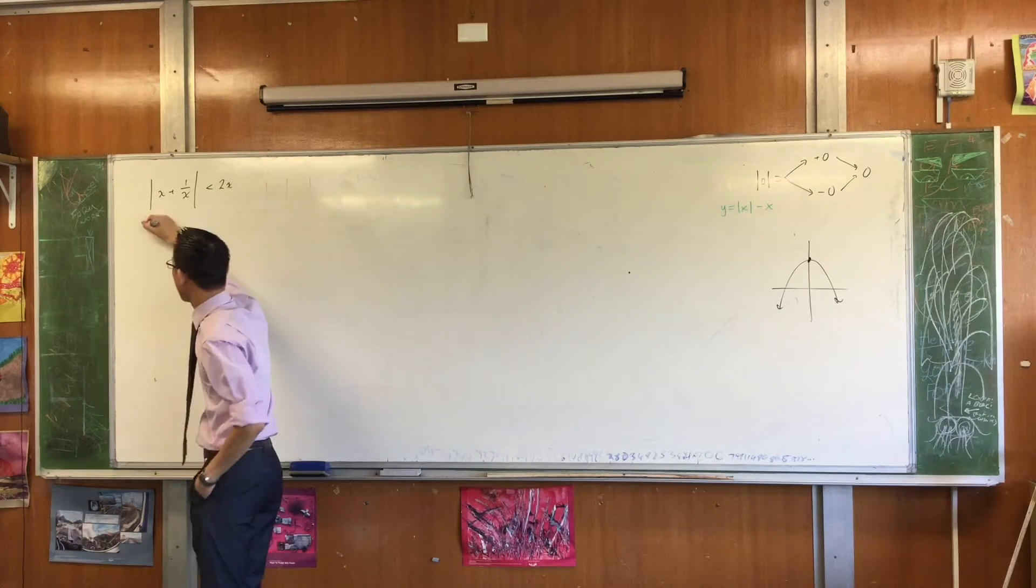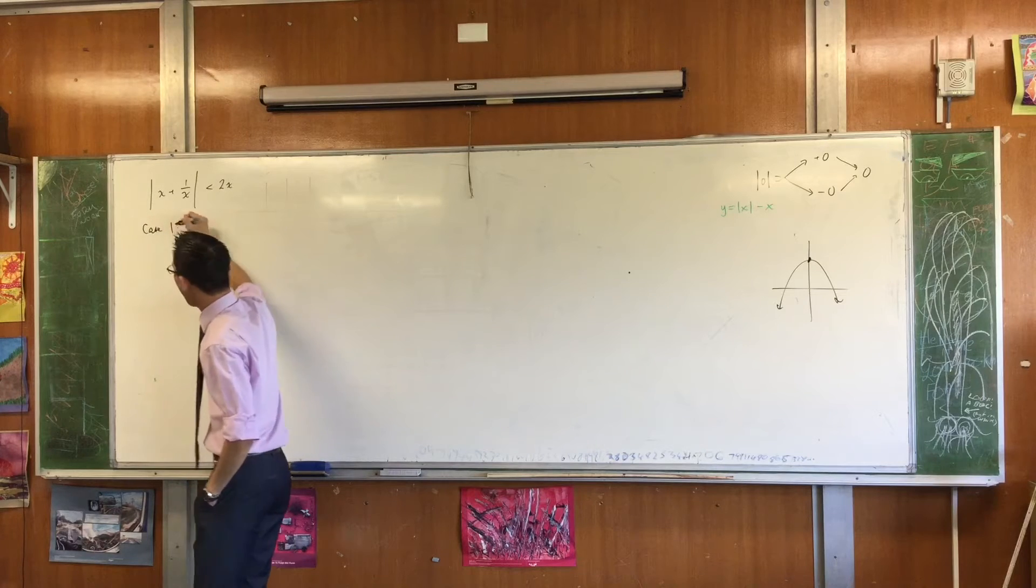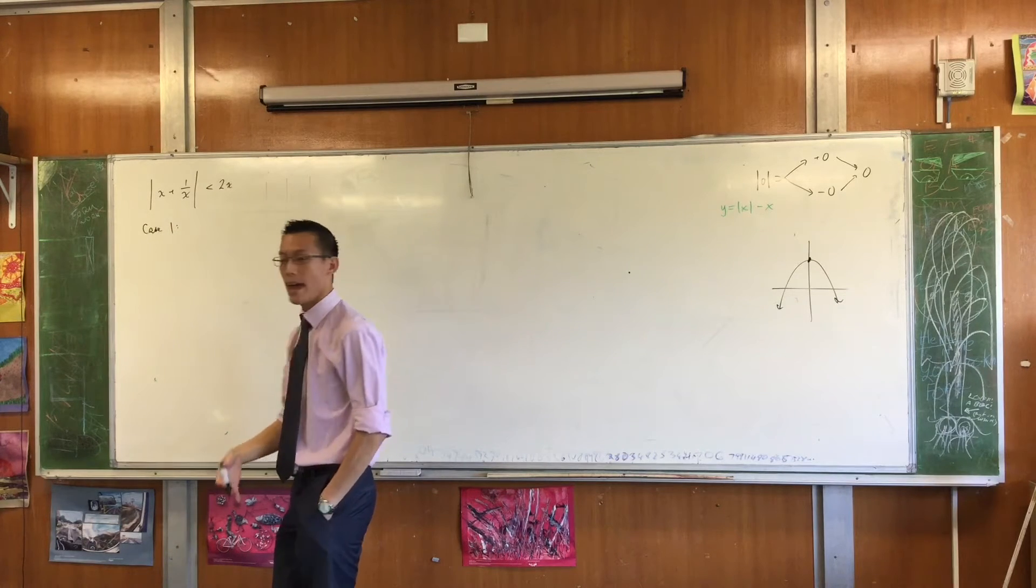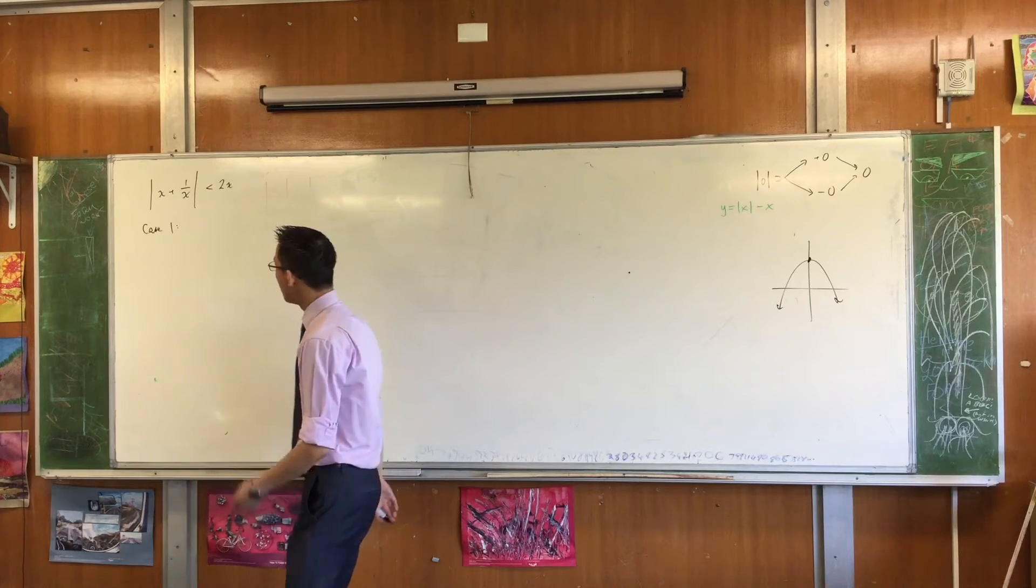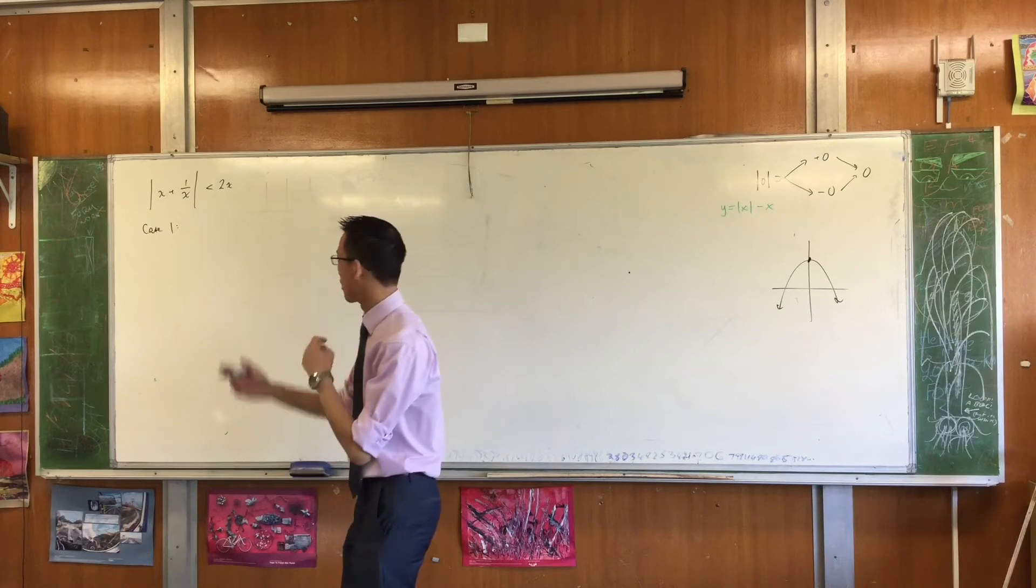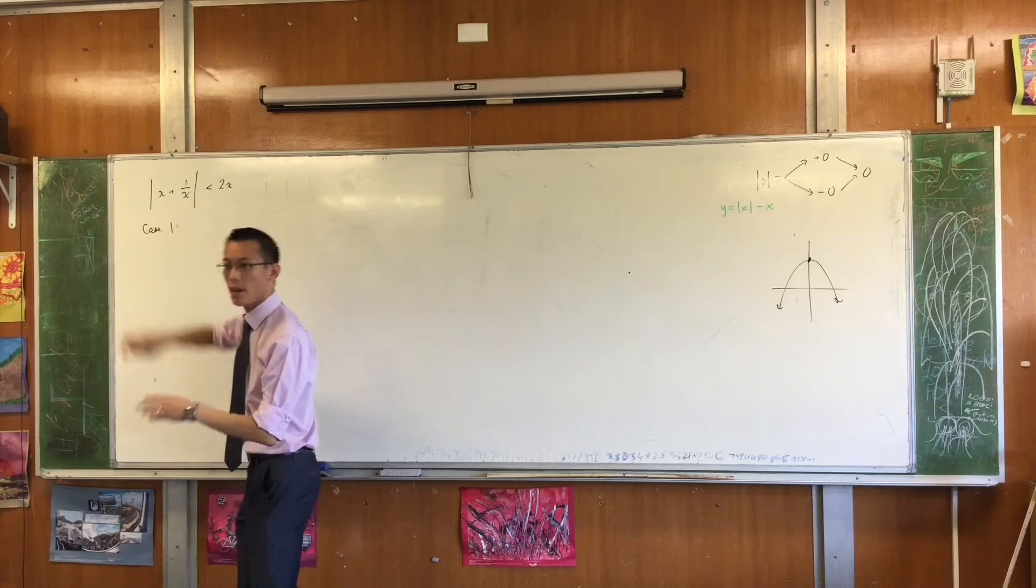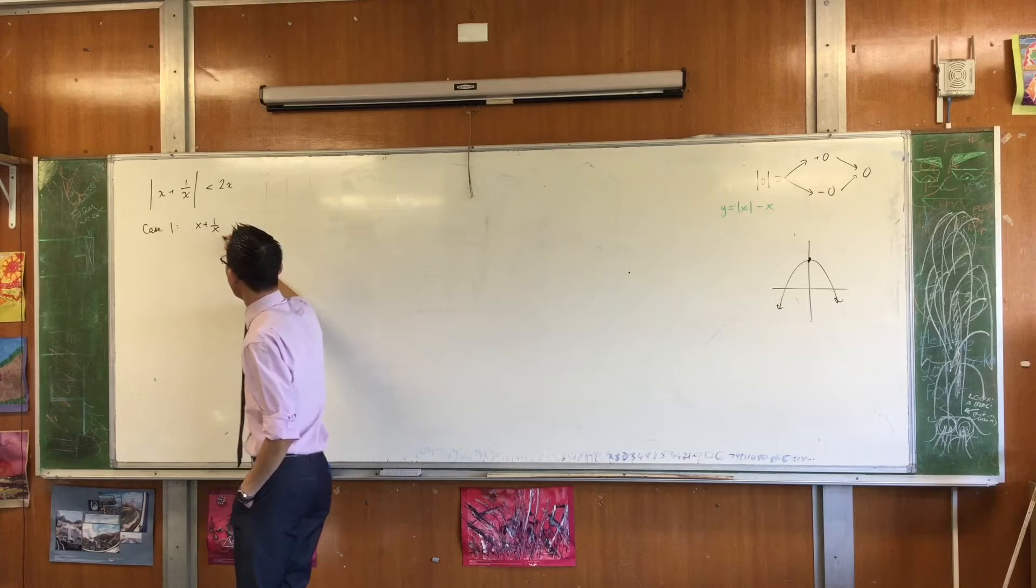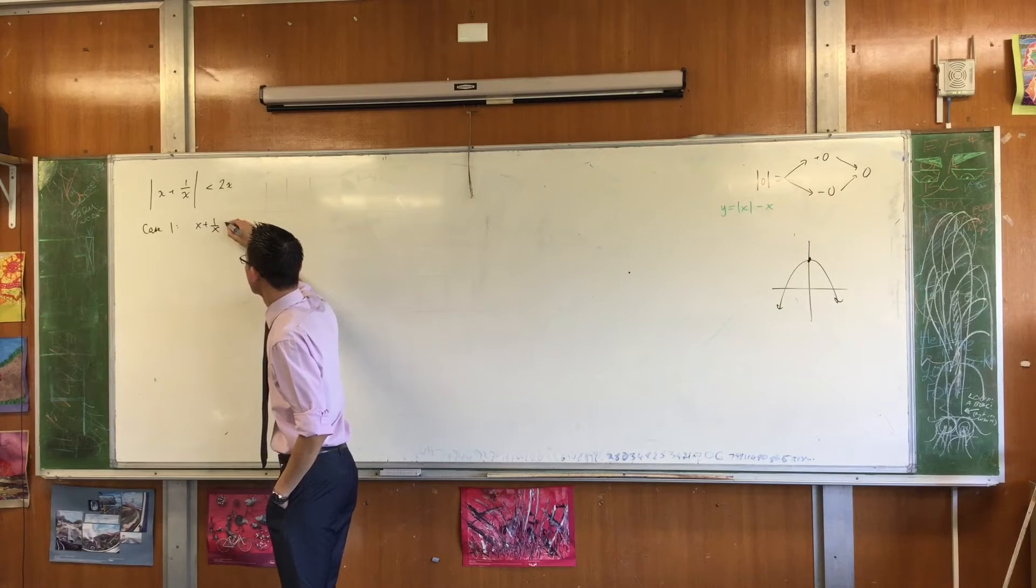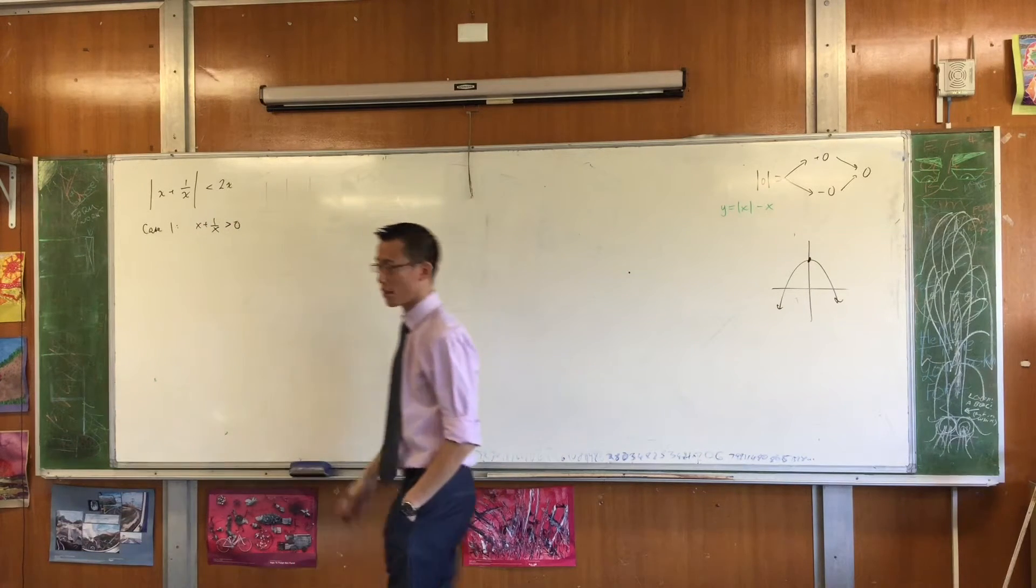So what I'm going to do is I'm going to name them. I'm going to say there's a case where x is negative, and therefore that absolute value will be this. And then there's a case where, well not x, the whole thing in here is positive, and that's a different thing. So case one is where x plus one on x is, we'll do the positive case first, okay?